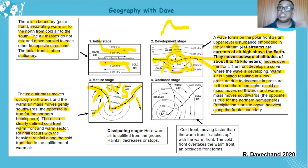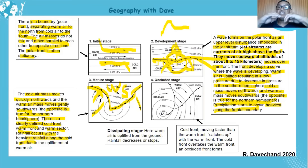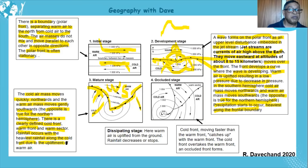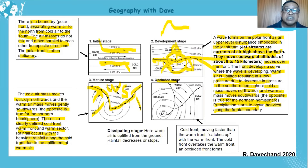The heaviest rainfall is along the cold front because of the steep pressure gradient. The steep gradient causes rapid upliftment of the warmer air in front, pushing it up rapidly. That is why cumulonimbus clouds form there. At the warm front you get less rainfall — consistent, soaking rain.